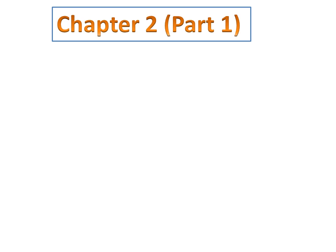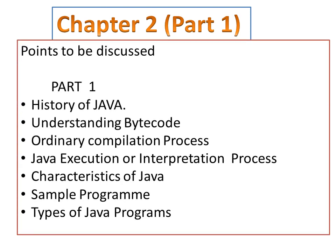Good morning everybody. We are going to start chapter 2, Introduction to Java. In chapter 2, we are going to discuss about various points: History of Java, understanding bytecode, ordinary compilation process of normal programming language, Java compilation procedure, Java execution and interpretation process, characteristics of Java, one sample program, and the different types of Java programs. This is part 1 of our studies of chapter 2.